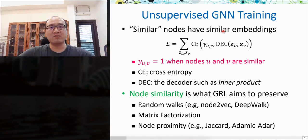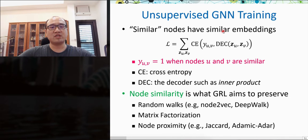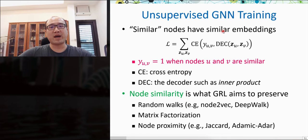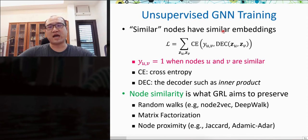If Y_UV equals 1, it means two nodes are similar. The decoder can use dot product or softmax function. Node similarity is exactly what graph representation aims to preserve. The similarity can be defined by random walk mechanisms used by Node2Vec or DeepWalk, by matrix factorization, or by node proximity measured by Jaccard coefficient or Adamic-Adar measure.